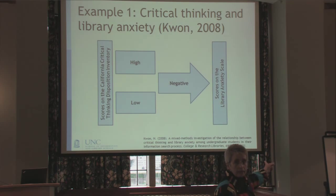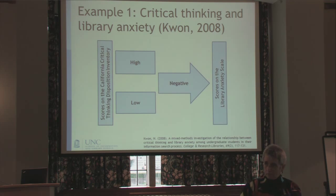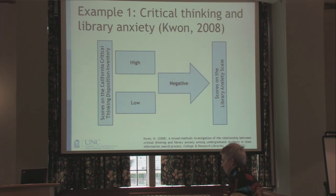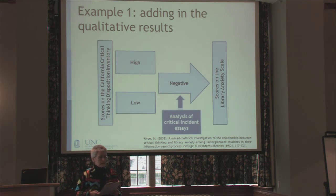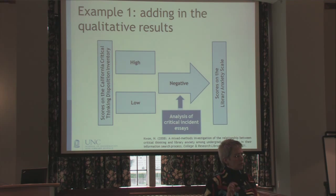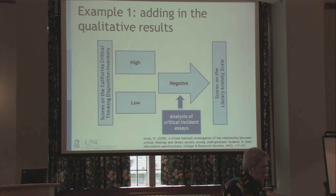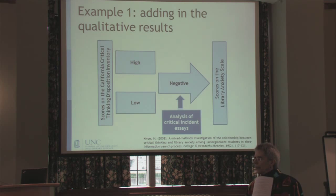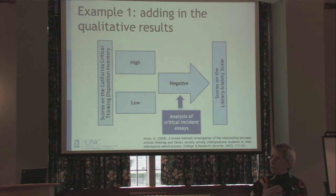The comparison between the high and low critical thinking groups on their anxiety scale scores confirmed a negative relationship between the two variables. Then Kwon tried to understand what was going on more deeply. Some qualitative data were also collected: each student wrote one essay about their most recent or most memorable experience using the library, including their thoughts and feelings about that incident — a soft critical incident technique approach done in writing rather than interviews.